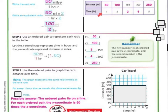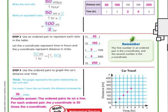I took those x-coordinates and y-coordinates from the chart and graphed them. For every one hour the car travels, the distance increases by 50. Going over 1 and up 50, over 2 and up 100, over 3 and up 150, over 4 and up 200, over 5 and up 250 — they form a straight line. For each ordered pair, the y-coordinate is 50 times the x-coordinate.